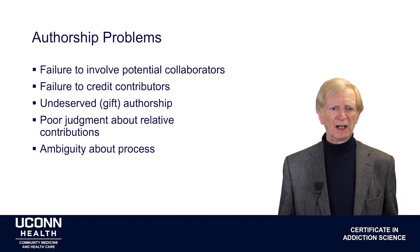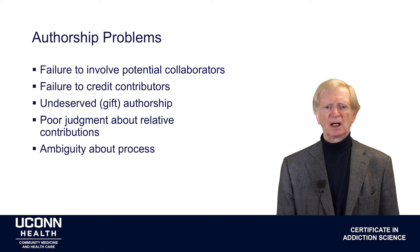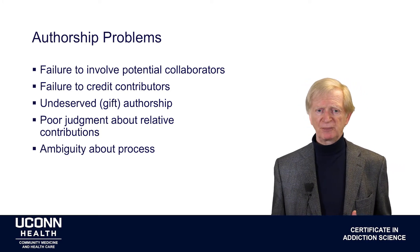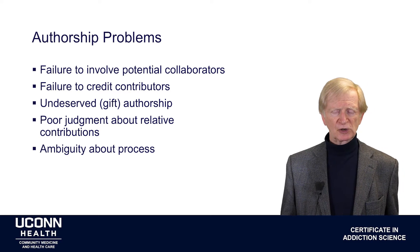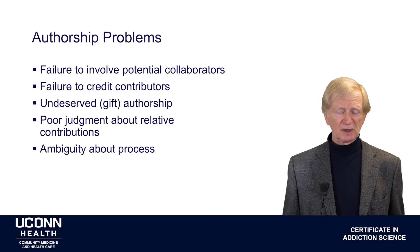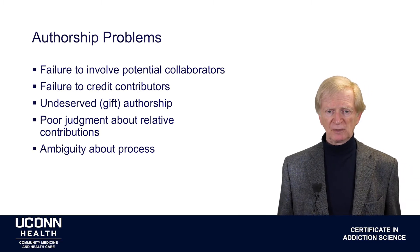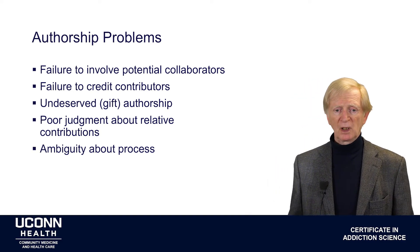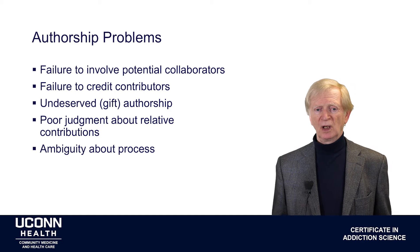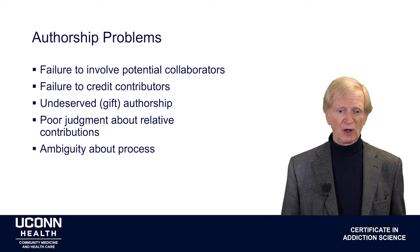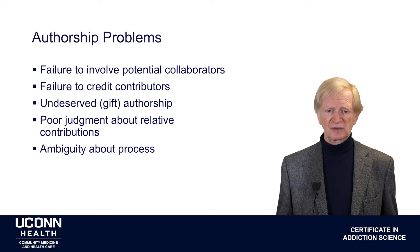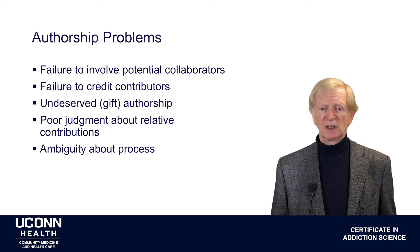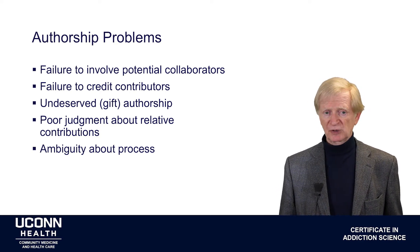Relative contributions are sometimes difficult to judge. If people have made more contributions than is reflected in how authorship is determined — for example, if the first author is someone who didn't contribute the most, or the second author contributed less than the third — it creates conflicts, bad feelings, and can lead to further problems in publishing an article.